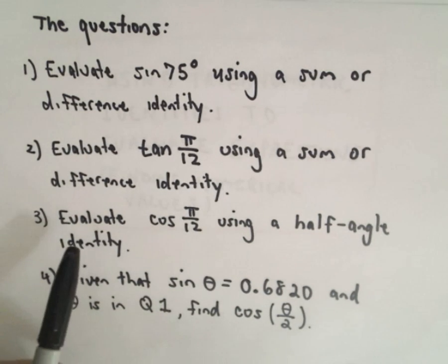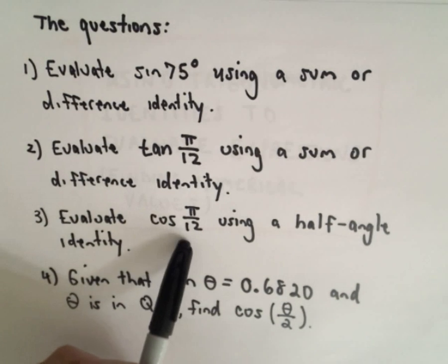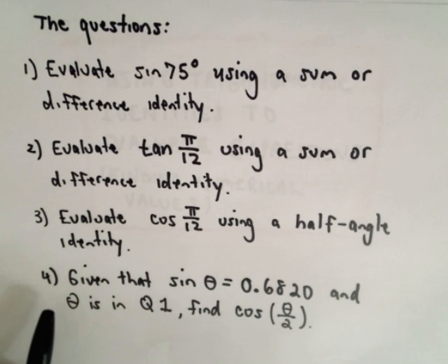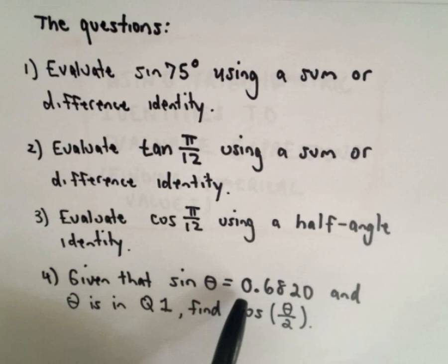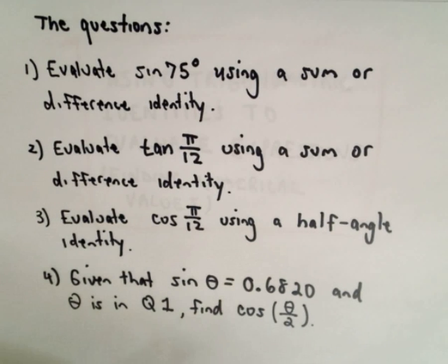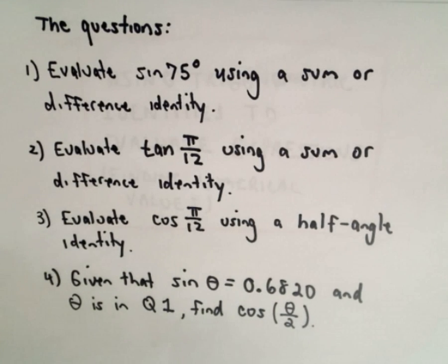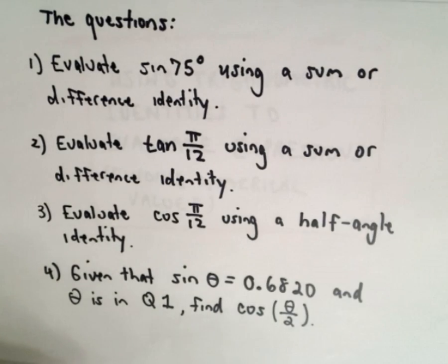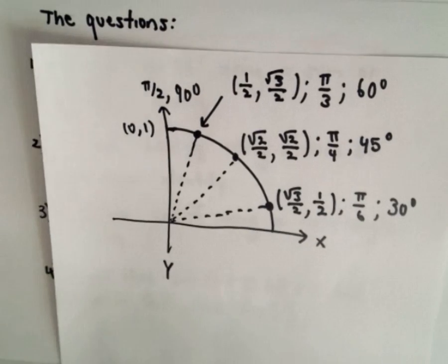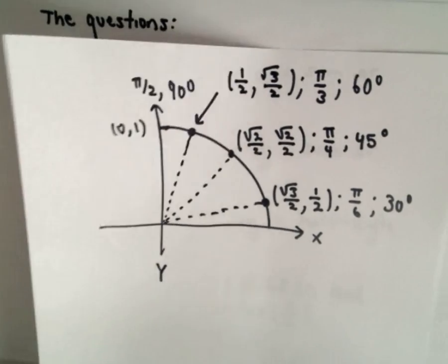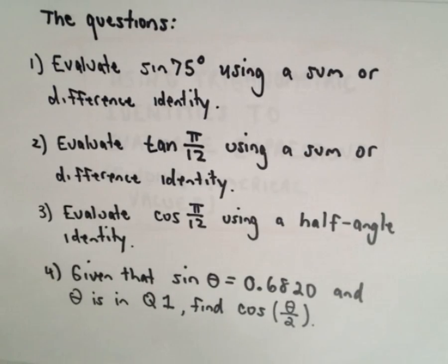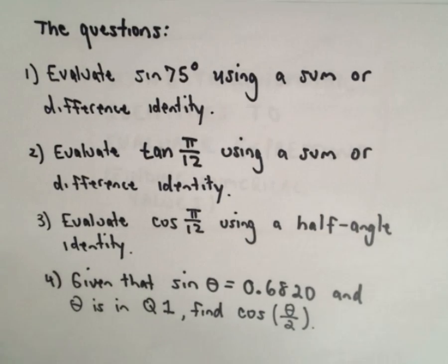Question 3 I'm going to evaluate cosine of pi over 12 using a half angle identity. And the last one, we're given that sine of theta equals 0.6820, theta's in quadrant 1, and we're going to find cosine of theta over 2. The first three I can do without a calculator by knowing the unit circle. The last one, number 4, I am going to use a calculator.